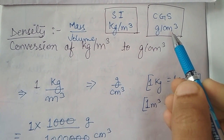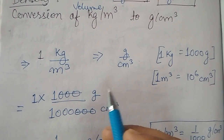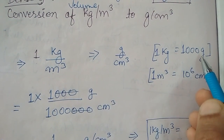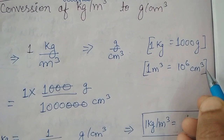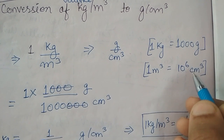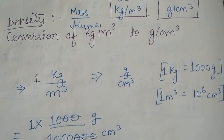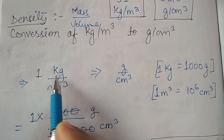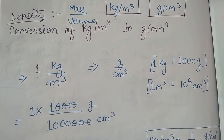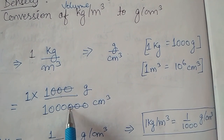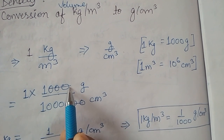I will explain how we can convert it very easily. We know that in one kilogram there is 1000 gram, and in one meter cube there is 10 to the power six centimeter cube, or 10 lakh centimeter cube. So in one kilogram per meter cube, we can rewrite it as 1000 gram over 10 lakh centimeter cube. Now we simplify it — we cancel the three zeros of the denominator with the three zeros of the numerator.